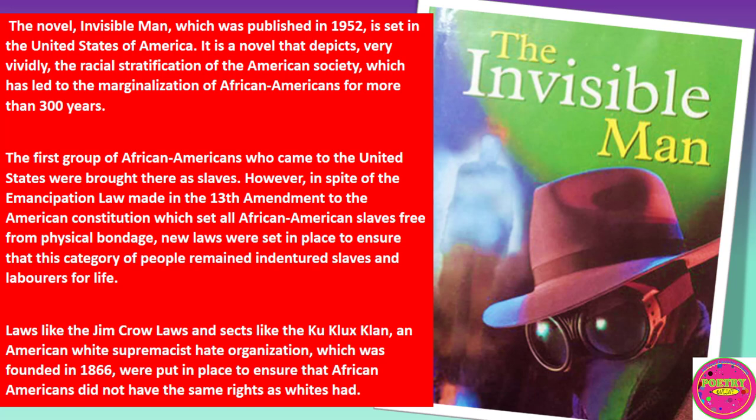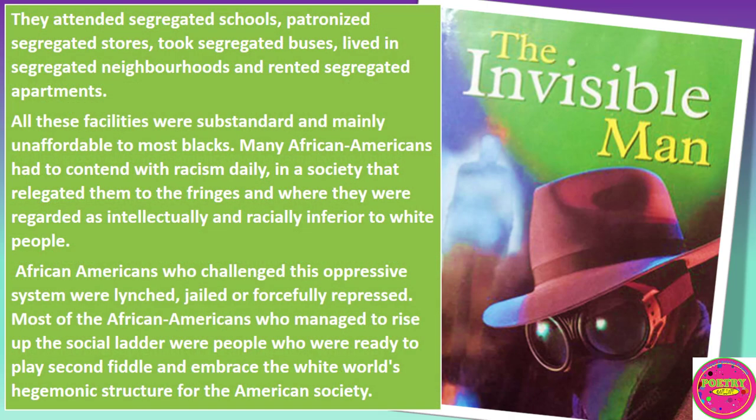Laws like the Jim Crow laws, and cells like the Ku Klux Klan, an American white supremacist hate organization which was founded in 1866, were put in place to ensure that African Americans did not have the same rights as whites. They attended segregated schools, patronized segregated stores, took segregated buses, lived in segregated neighborhoods, and rented segregated apartments. All these facilities were substandard and mainly unaffordable to most blacks. Many African Americans had to contend with racism daily in a society that relegated them to the fringes, and where they were regarded as intellectually and racially inferior to white people.